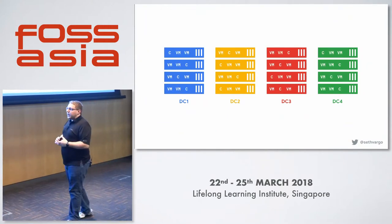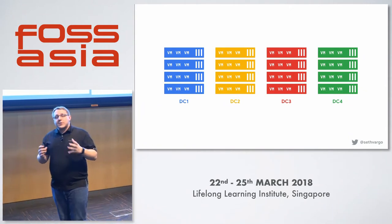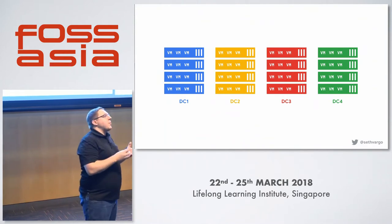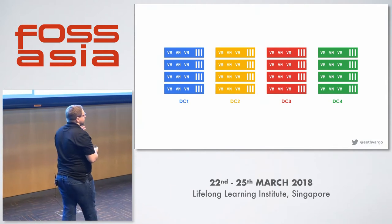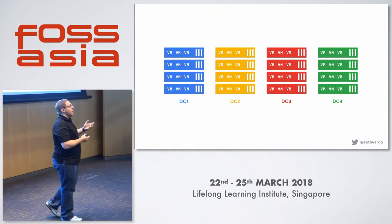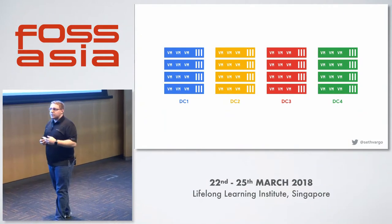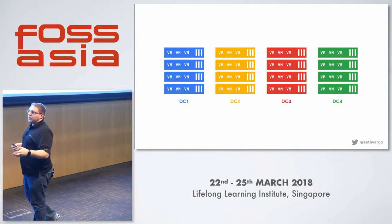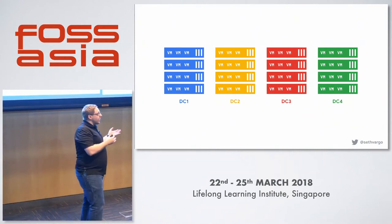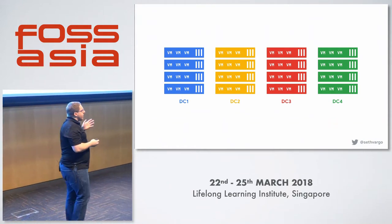Then we start seeing companies like Xen and hypervisors come along, and all of a sudden we've revolutionized the industry. Instead of having one application per server, we can now segregate at the operating system level using hypervisors — this is where virtual machines start to become popular. Additionally, virtual machines give us this first concept of a disposable artifact. We can build an entire virtual machine with our application and all of its dependencies and deploy it, spin them up and tear them down. I use the word 'quickly' ironically because during this time, quick was like four to five weeks.